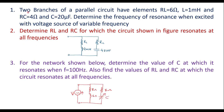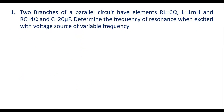The first numerical: two branches of a parallel circuit have elements RL equal to 6 ohm, L equal to 1 mH, and RC equal to 4 ohm and C equal to 20 microfarad. Determine the frequency of resonance when excited with a voltage source of variable frequency. Let me draw the circuit for this.